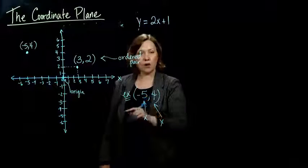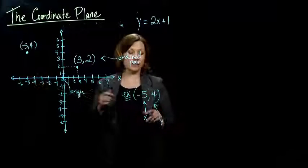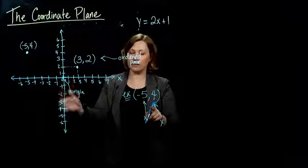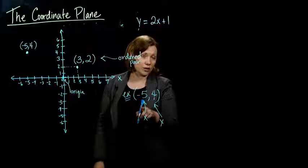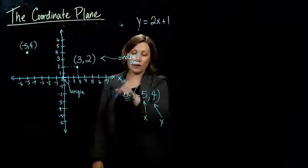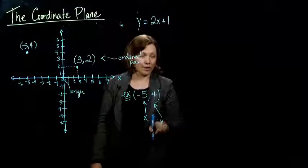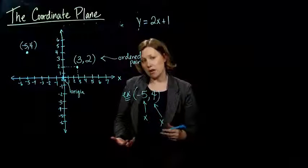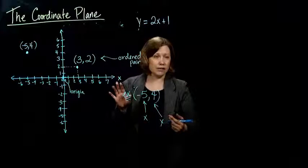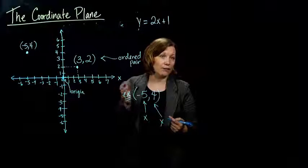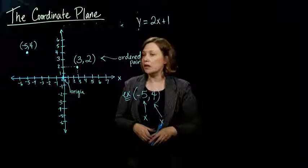So the first number always represents where you're at on the horizontal axis, and the second number represents where you're at on the vertical axis. Usually the first number, the horizontal axis we call x, and the vertical axis we call y, but we really could call it anything we want. These x's and y's are just labels for variables that represent some number.